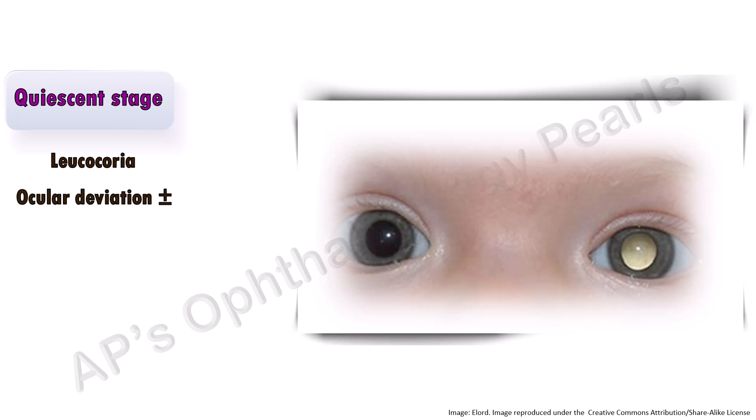If the patient is in the glaucomatous stage, there may be accompanying redness of the eye, pain, and an enlarged globe. Intraocular pressure is raised in the glaucomatous stage. Calcification occurs in 75% of Retinoblastomas and is almost pathognomonic. Lactate dehydrogenase activity may be raised in the aqueous relative to the serum level.